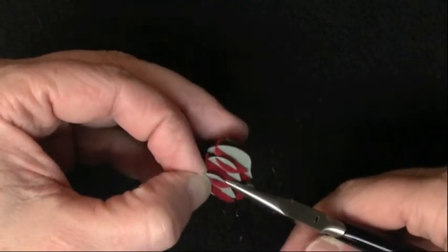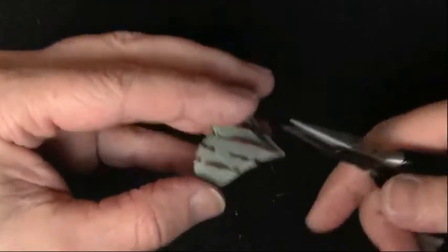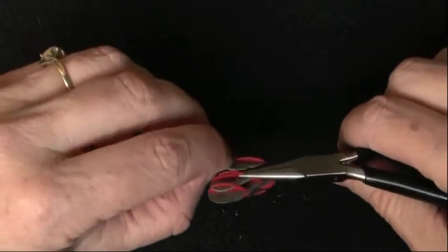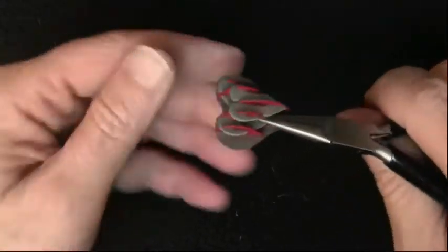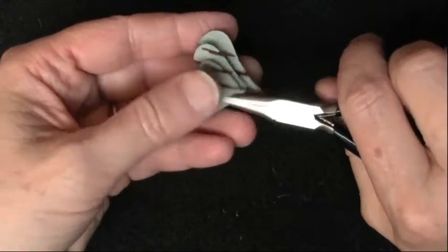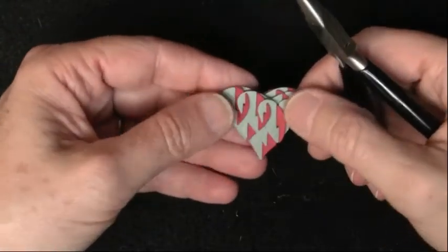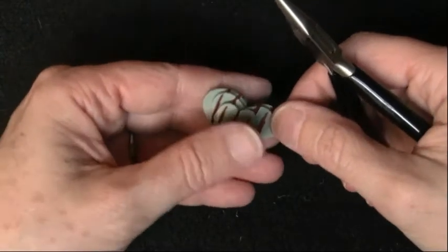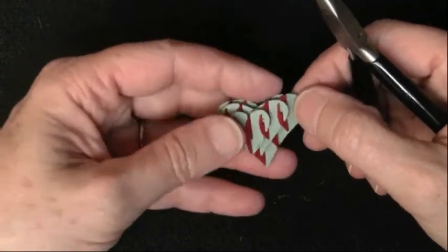Now if you're going to decorate these, which you probably will want to do, you want to decorate it before you put it together. But the first time you put one of these together, do an undecorated one, and maybe use two colors like this. It'll make it a little bit easier to see what you're doing.